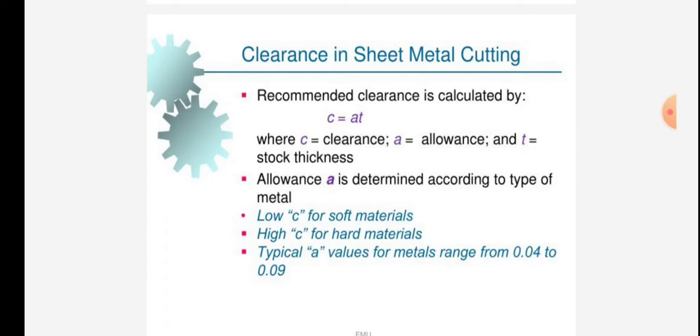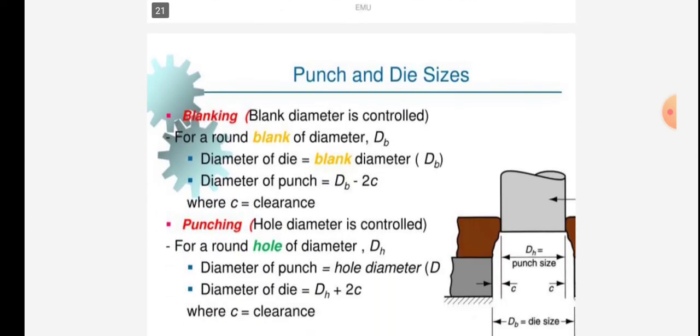Recommended clearance is calculated by C equals AT, where C is clearance, A is allowance, and T is stock thickness. Allowance A is determined according to the type of metal: low C for soft materials, high C for hard materials. Typical A values for metals range from 0.04 to 0.09.